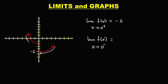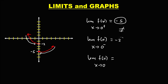For the left side limit, x approaches 0 from the left, and the limit is equal to negative 2. To find the limit of f(x) as x approaches 0: since the right side limit is not equal to the left side limit, therefore this limit does not exist.